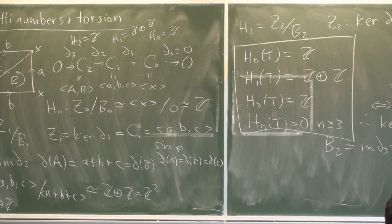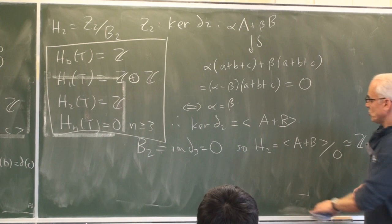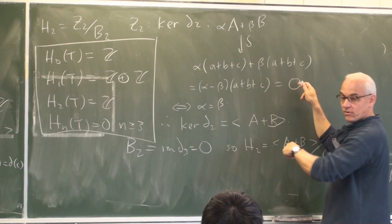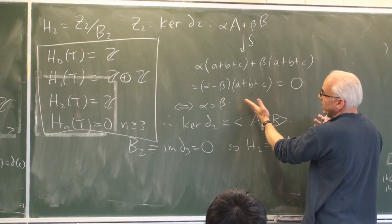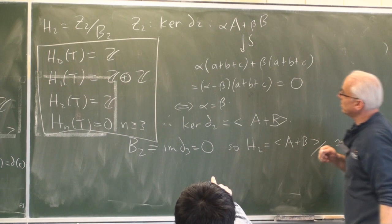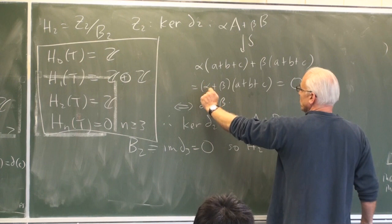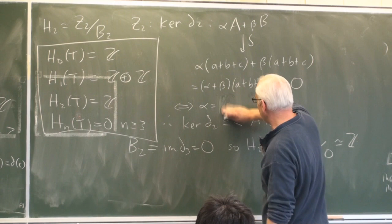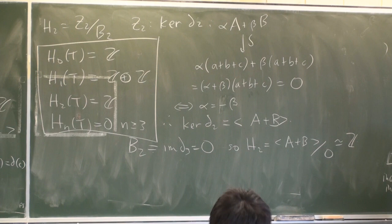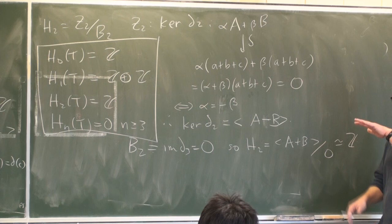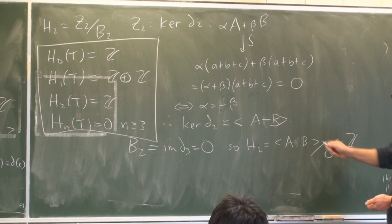A student asked about the computation: when we did the arithmetic, the boundary of alpha·A plus beta·B is alpha plus beta times (A+B+C), not alpha minus beta. So the condition is alpha plus beta equals zero, meaning alpha equals minus beta. The kernel is therefore A minus B, not A plus B, and the second homology is Z generated by A minus B over zero, which is Z.